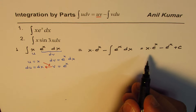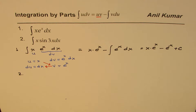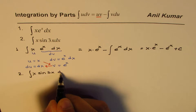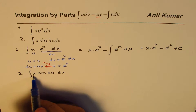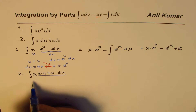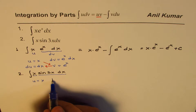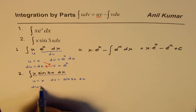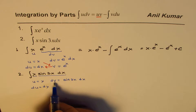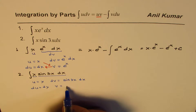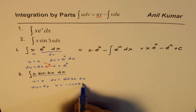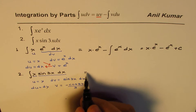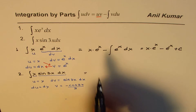Let me take another example to show the technique — the integral of x·sin(3x) dx. As before, we split it into two functions. I'm saying u equals x and dv equals sin(3x) dx. Differentiating u gives du equals dx. Integrating dv gives v — the integral of sin is minus cos(3x) divided by 3.